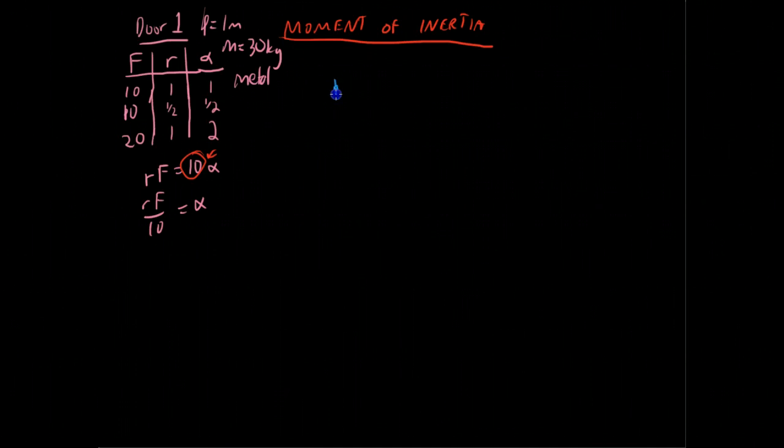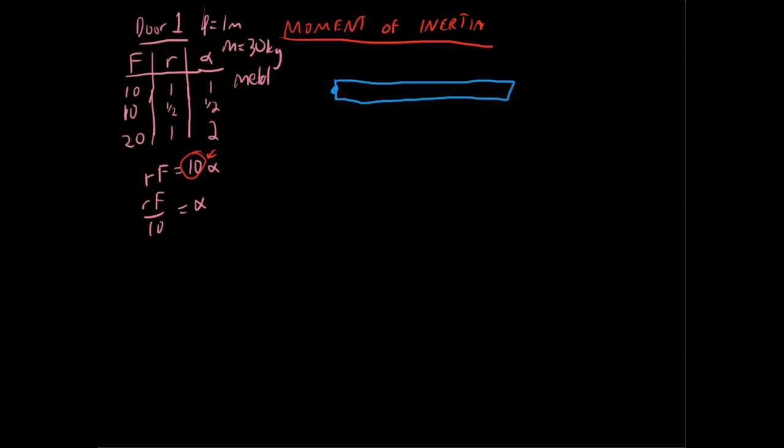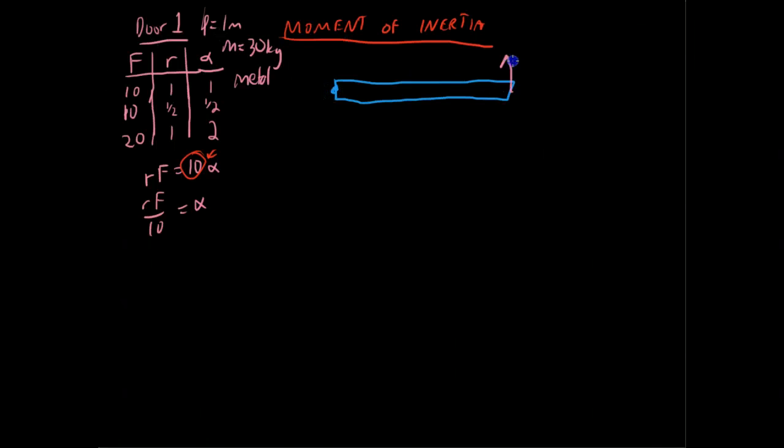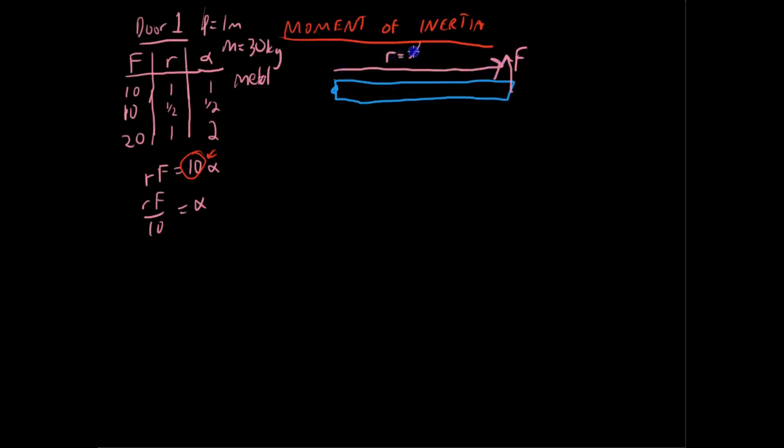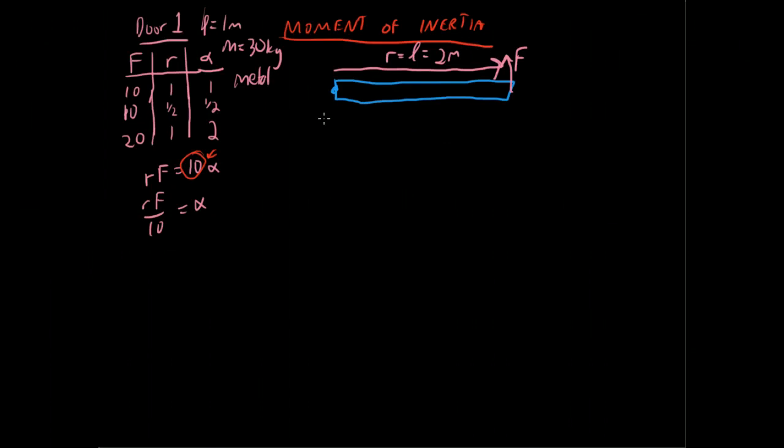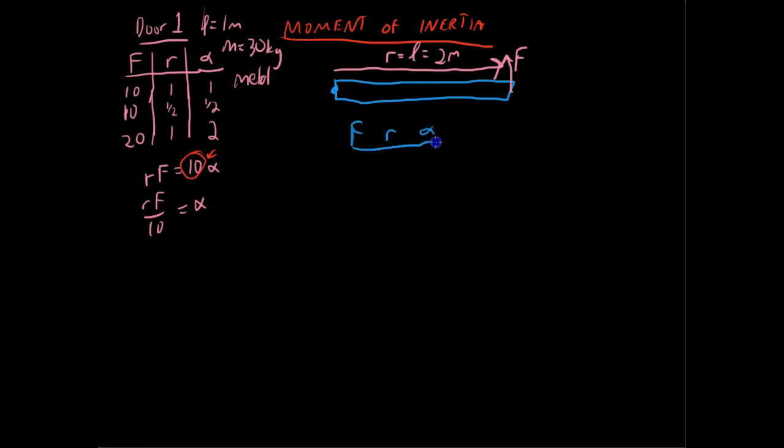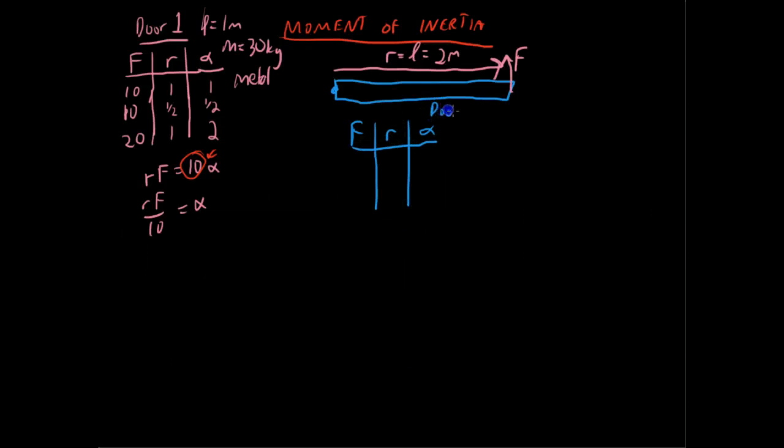This door is going to be much like the previous door, only twice as long, and we're going to once again apply our force to the edge of it. Our r will equal l, which equals 2 meters now, and we're going to do much the same thing that we did before. So I'll make another table, and we'll make this one blue, and I'll do f and r and alpha for this set, and this is door 2.